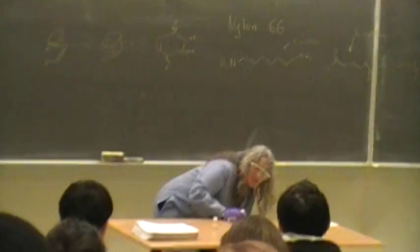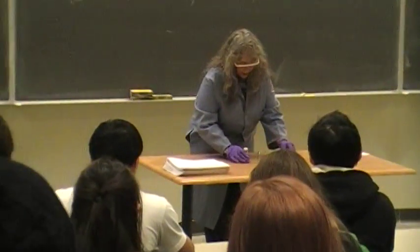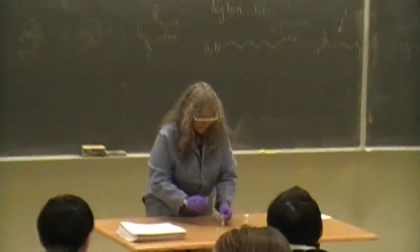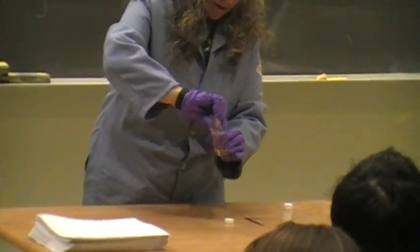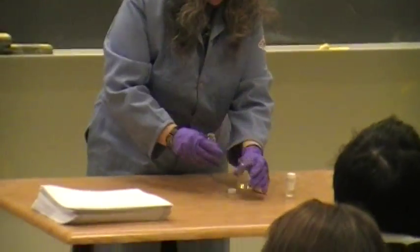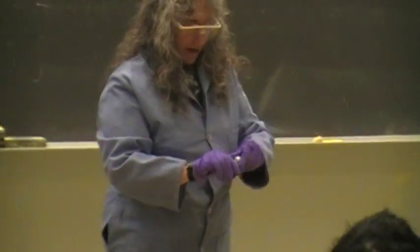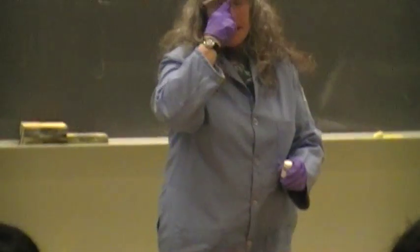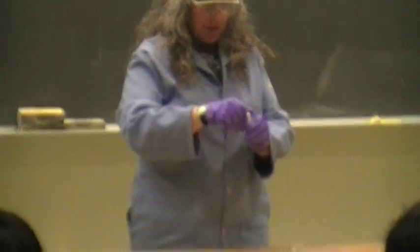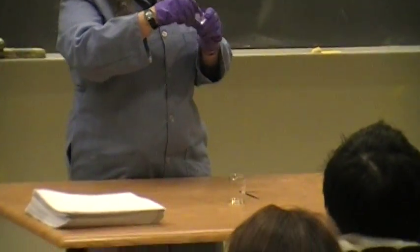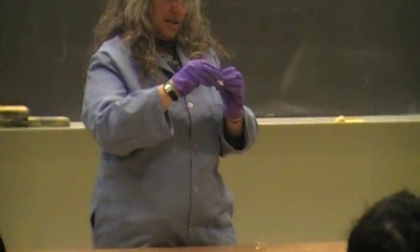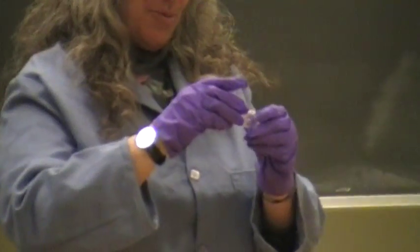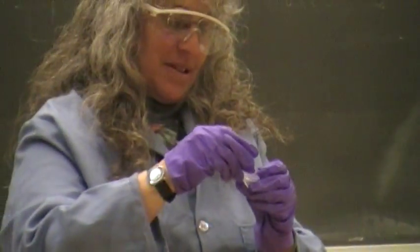So what I'm going to do is pour the aqueous solution in first. And it's all pre-measured, but we usually use 10 mils of that. And then you'll see a little bit of HCl coming off the top when this happens, but not too much. And then, let's see, as long as you don't have to breathe it, you can see a little bit of it's on the edges.